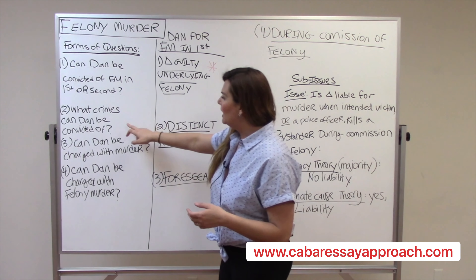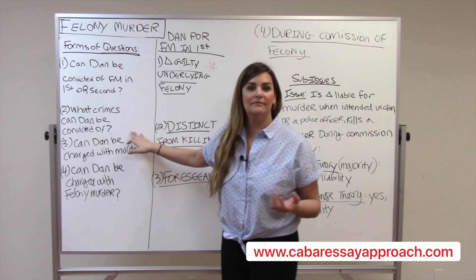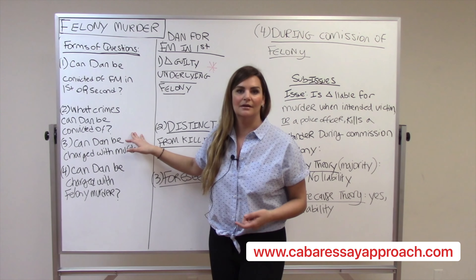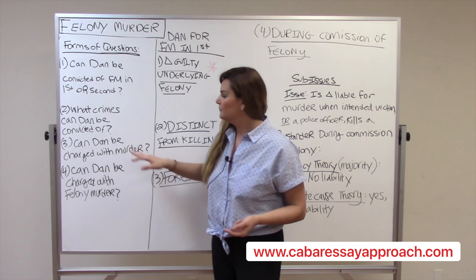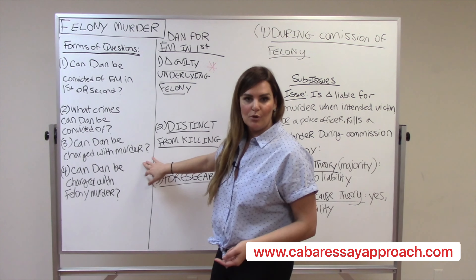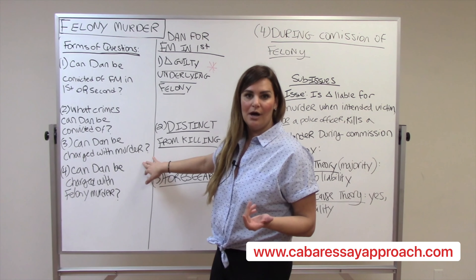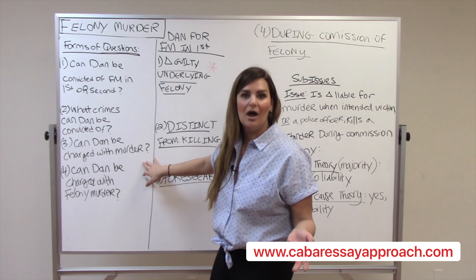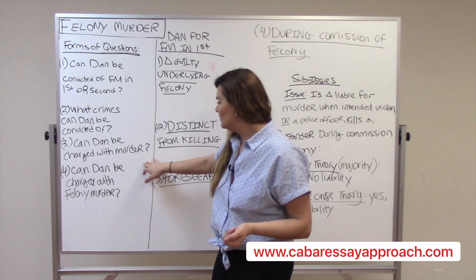The second call type is: what crimes, if any, can Dan be convicted of? Here you'd have to spot that felony murder is the issue. The third type is: can Dan be charged with murder? Again, you'd have to spot that felony murder is the charge of homicide you need to address.